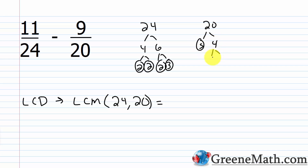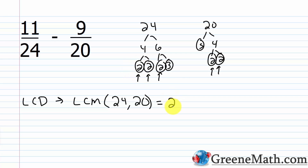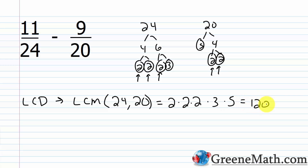Now build the list: for the factor 2, there are three occurrences in 24's factorization and two in 20's. Go with the largest number of repeats — that's three — so put in 2 × 2 × 2 = 8. Where students make mistakes is throwing all of them in, giving a common multiple but not the least common multiple. Three is not common to both, so throw it in. Five is not common to both, so throw it in. The LCD is 2 × 2 × 2 × 3 × 5 = 120.